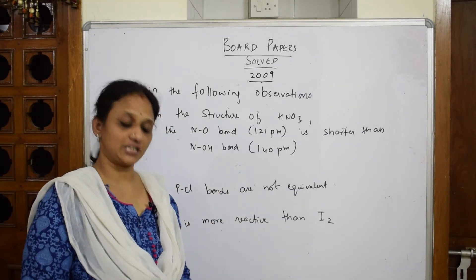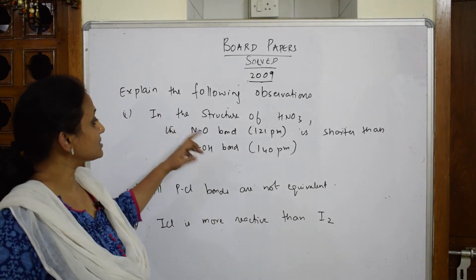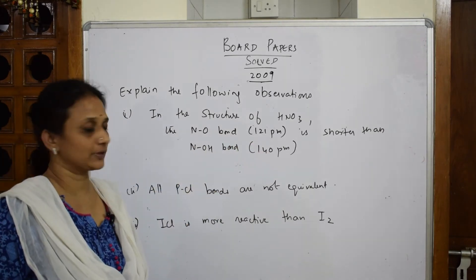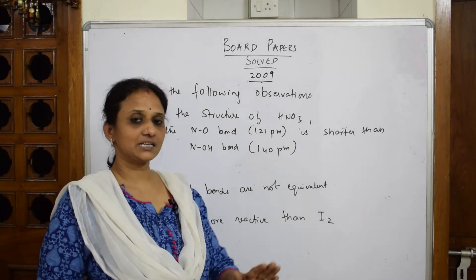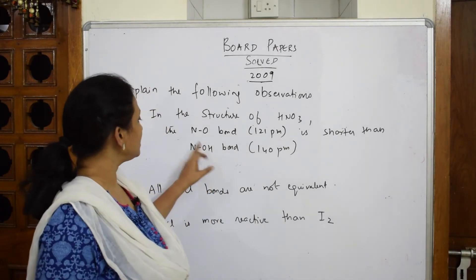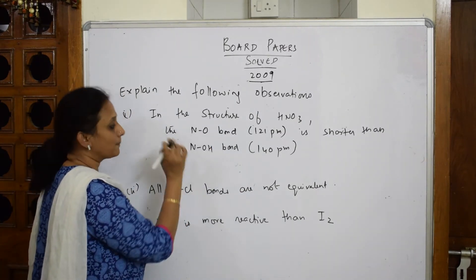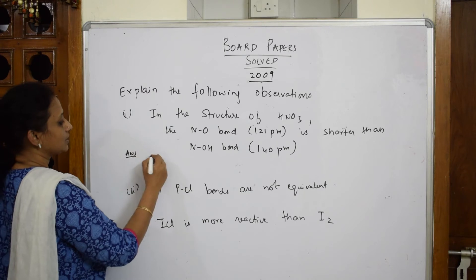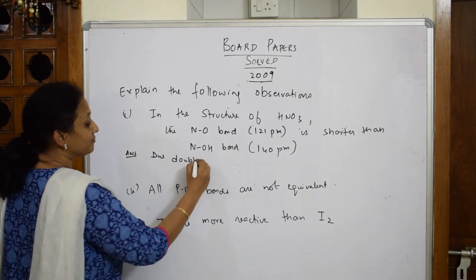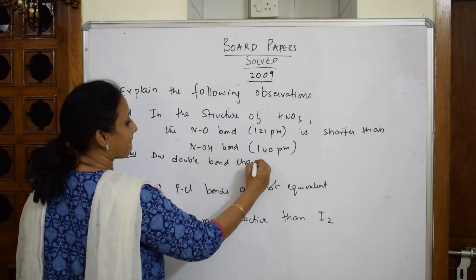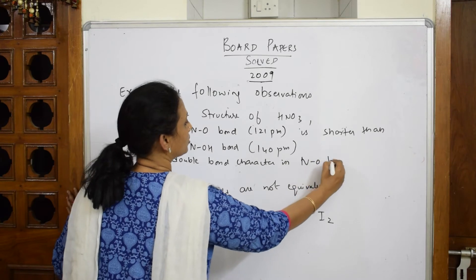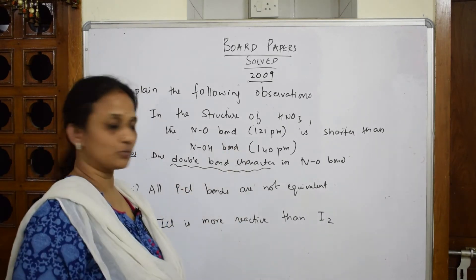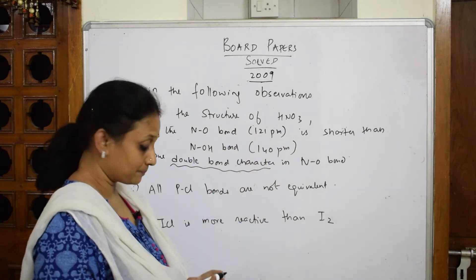Let's do the leftover part of the 2009 paper, Part B. They ask: explain the following — in the structure of HNO₃, the N=O bond is 121 picometers and shorter than the N–O bond. Whenever we call something shorter, we compare single bond vs double bond vs triple bond. This bond has double bond character, while this is a single bond. So the answer is: due to double bond character in the N=O bond, it is shorter. That's the whole concept.